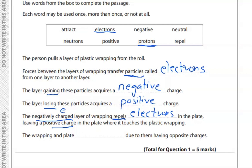The wrapping and the plate stick together, which means they are attracting — as we already saw in the question. The wrapping and plate attract due to having opposite charges. Opposite charges attract, and sticking together confirms attraction. So we are done with the first question.